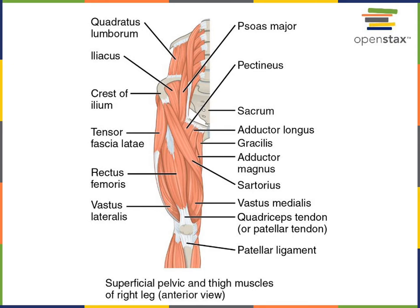We'll start here with a superficial view of the anterior femoral region where the quadriceps muscle group is located. There are four muscles in the quadriceps group. They all have a common insertion and action to extend the tibiofemoral joint, and they insert onto the patella, and then from the patella down to the tibial tuberosity via the patellar ligament. There are three superficial muscles we can see from this view, and a fourth muscle located deep to the rectus femoris.